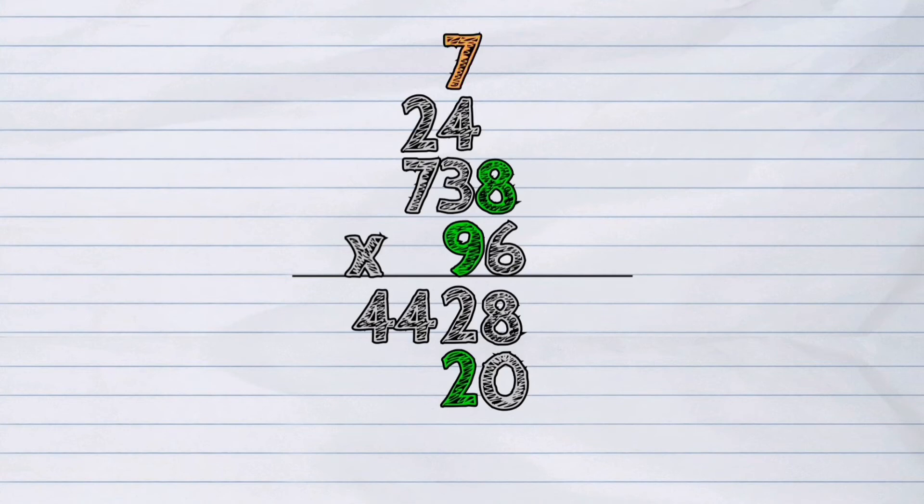Next, 9 times 3 is 27. The 7 we regrouped will then be added to 27, which makes it 34. We put 4 in the hundreds place column and carry 3 above the hundreds place of the multiplicand.